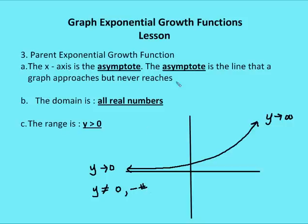The x-axis is going to be the asymptote — the line which the graph approaches but never reaches. The graph gets closer and closer to the x-axis but never touches it.